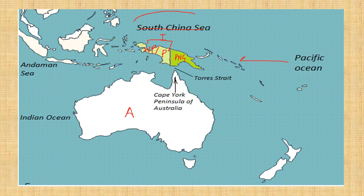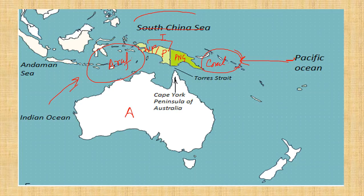New Guinea is surrounded generally by the Pacific Ocean and Indian Ocean. More specifically, to the south is the Arafura Sea, which is a branch of the Indian Ocean, and to the east is the Pacific Ocean, including the Coral Sea. The narrow passage of water separating New Guinea Island from Australia is known as the Torres Strait.